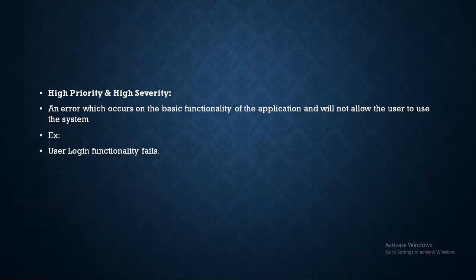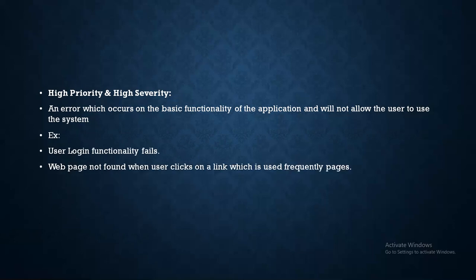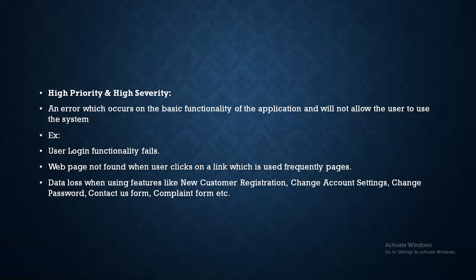Examples of high priority and high severity: User login functionality fails — even with valid username and valid password, the system does not allow login. Another example: a web page not found when a user clicks on a frequently used link. Also, data loss when using features like new customer registration, change account settings, change password, contact us form, or complaint form — data entered is not being stored.